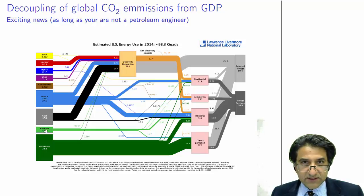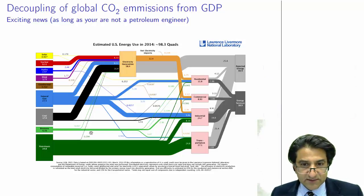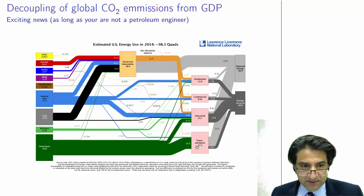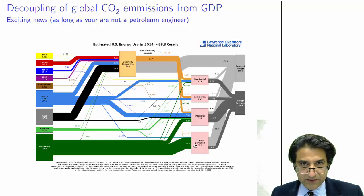Coal seam gas is a little bit dangerous in terms of affecting the water table — drilling for it can release gases into the water table and affect living organisms. Petroleum, you can see, is going almost exclusively — two thirds of it — into transportation, and again a lot of that is rejected heat. Only about 5% goes into the actual use of the product itself, so transportation via petroleum is hugely inefficient.